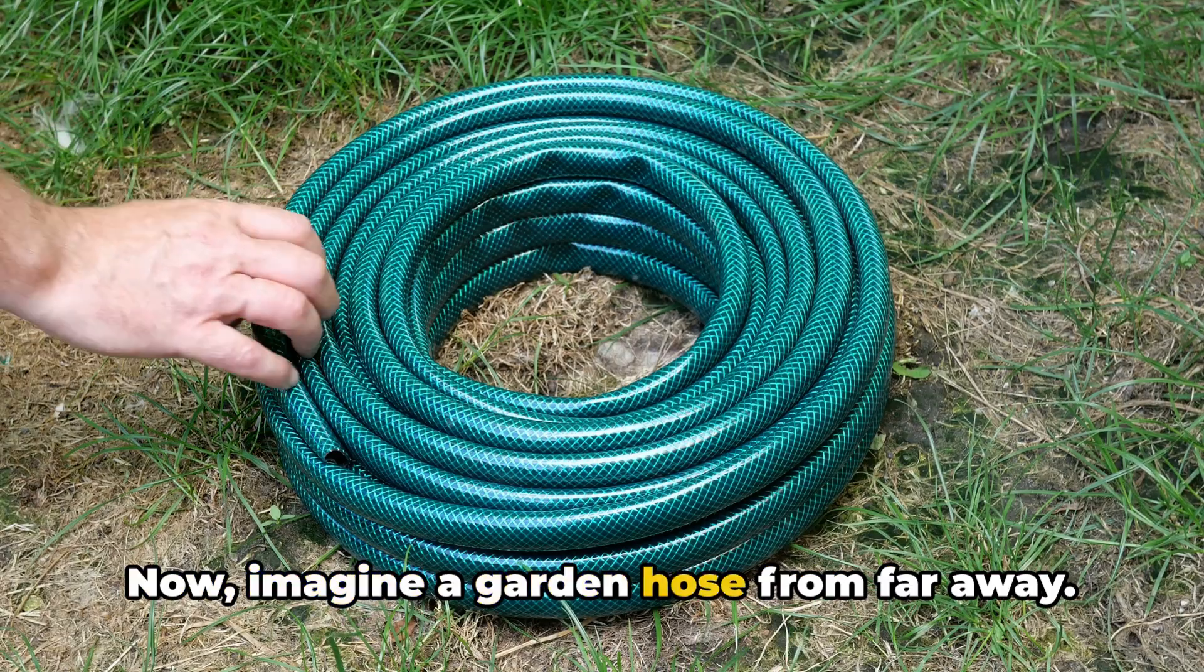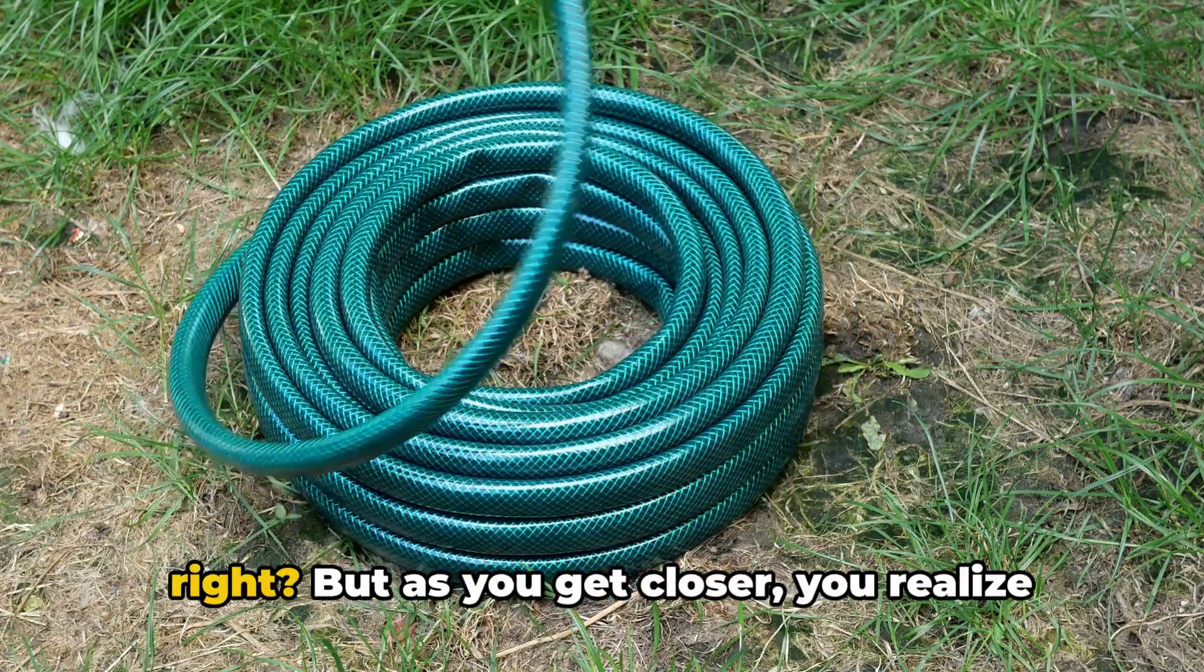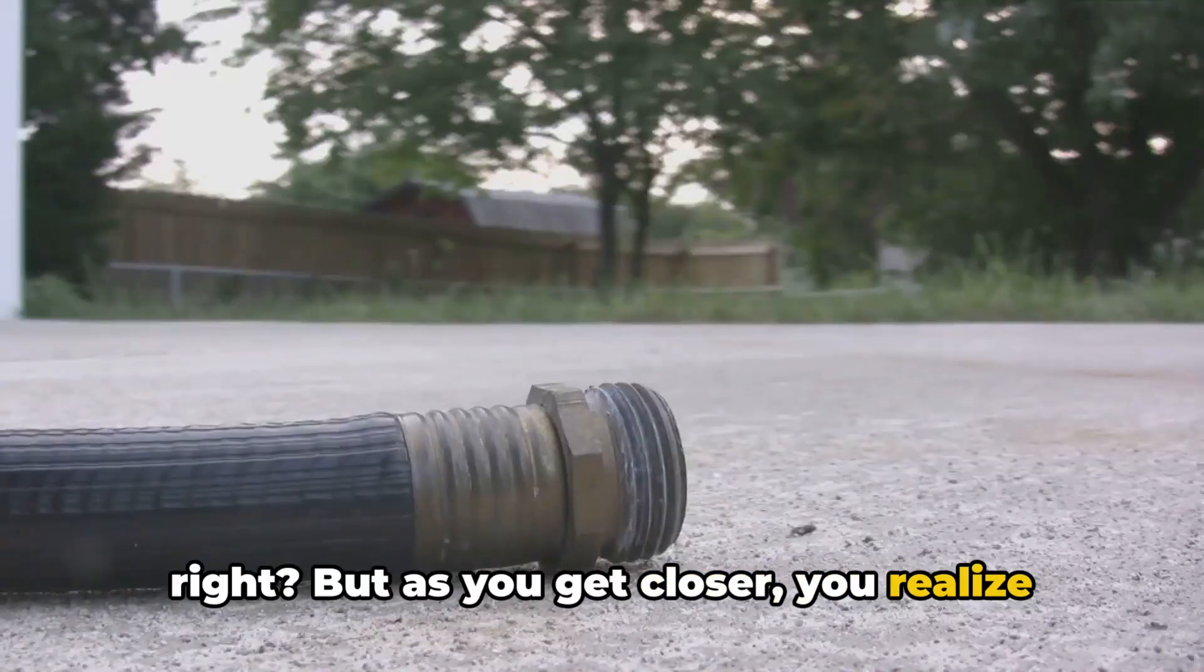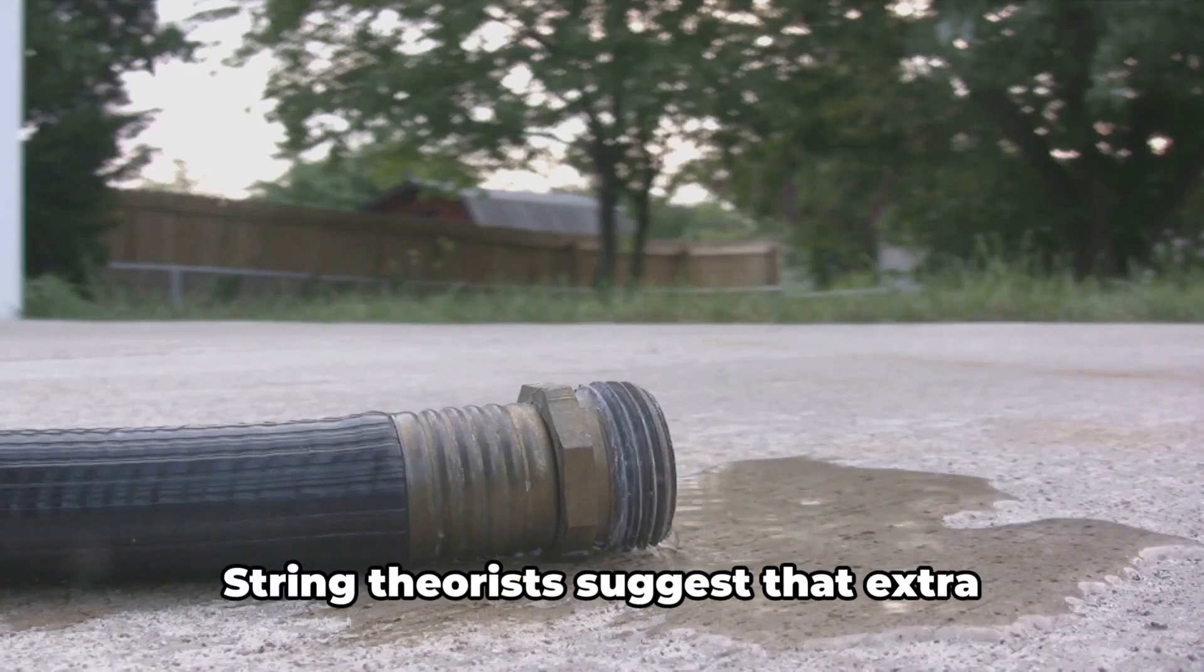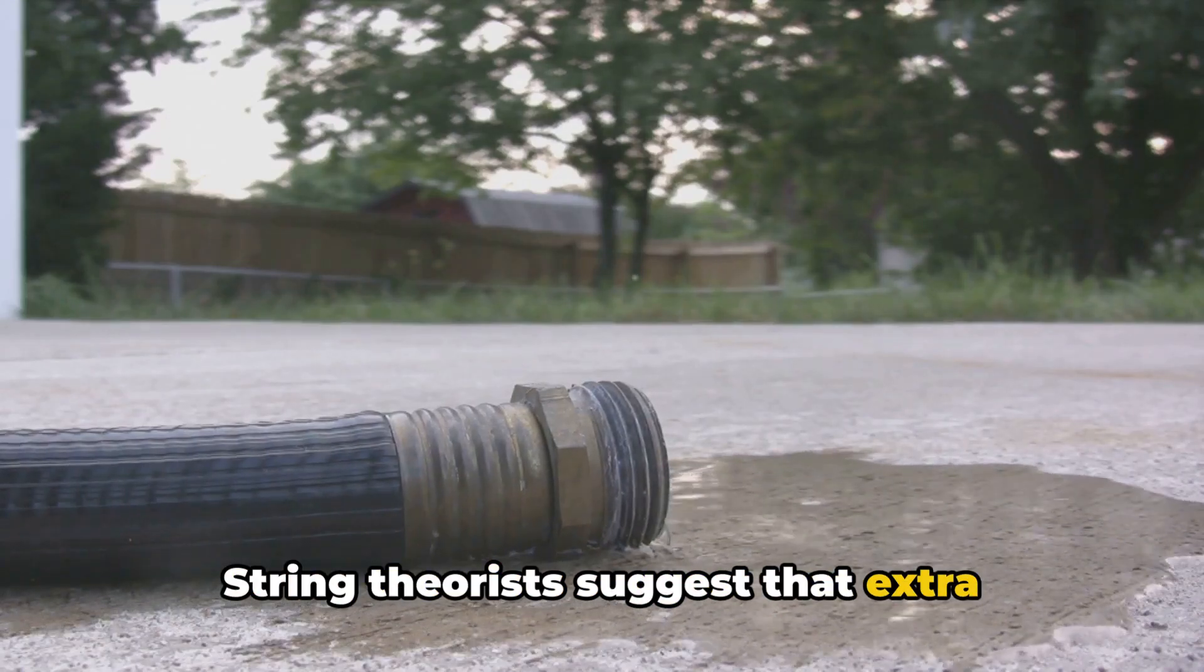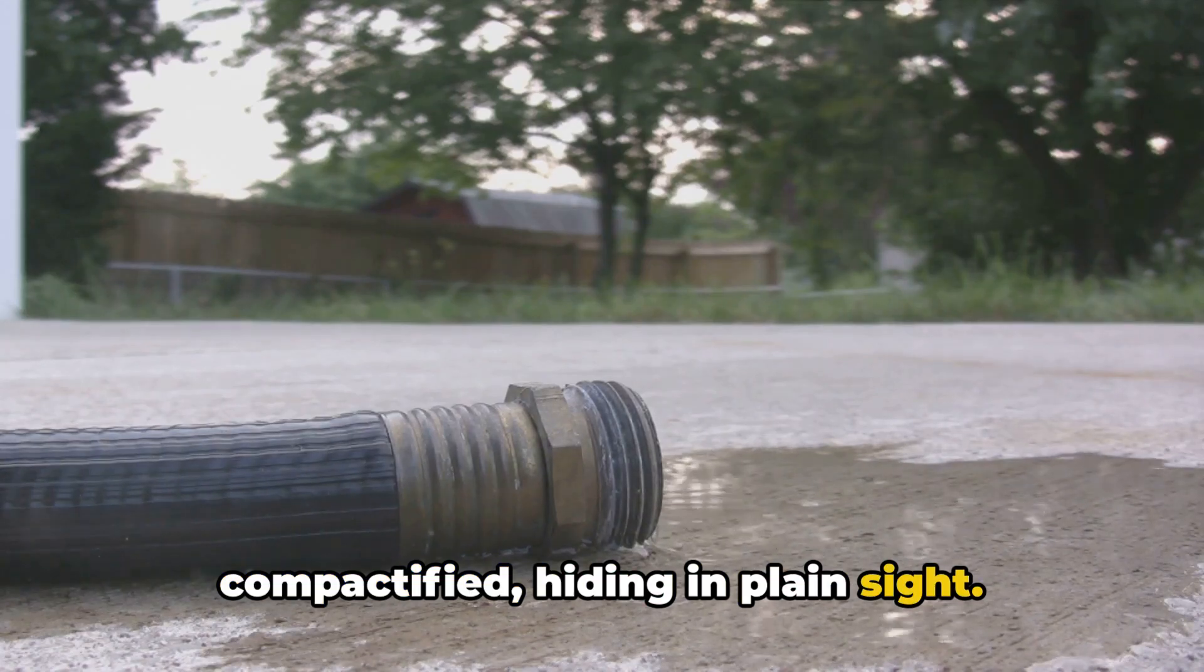Now imagine a garden hose from far away. It looks like a one-dimensional line, right? But as you get closer, you realize it has a second dimension wrapped around it. It's a cylinder. String theorists suggest that extra dimensions could be similarly compactified, hiding in plain sight.